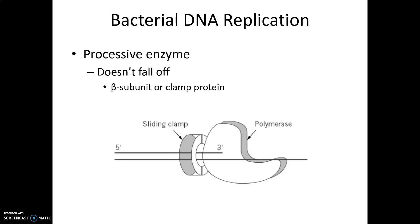Without the beta subunit, it can only put on about 10 nucleotides before it falls off. But with the beta subunit, it's able to get about 750 nucleotides per second, allowing it to do its job more efficiently.